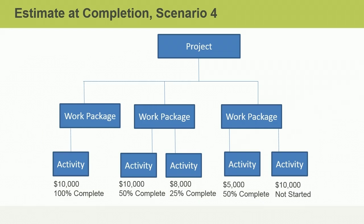We further decomposed the WBS into activities and estimated the cost of those activities. Now that we are in the middle of project work, some activities are completed, some are in progress, and some have not yet begun. Can you think of one way we might consider the money already spent along with the remaining work yet to be done, and use that information to establish a new EAC?